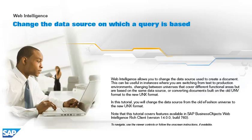Web Intelligence allows you to change the data source used to create a document. This can be useful in instances where you are switching from test to production environments, changing between universes that cover different functional areas but are based on the same data source, or converting documents built on the old UNV format to the new UNX format.